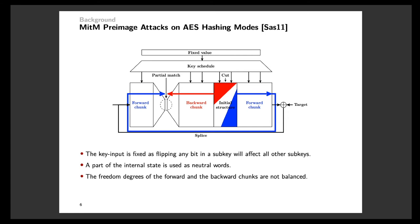In terms of the complexity of finding a collision at the matching stage, we notice that the freedom degrees of the forward and the backward chunk are not balanced in this attack. Specifically, the freedom degrees of the forward chunk are much less than those of the backward chunk. So if we can improve the freedom degrees of the forward chunk, the attack will be accordingly improved. And this is what we did in this paper.